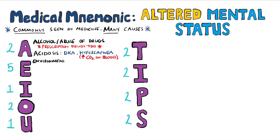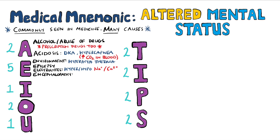E is our biggest list of causes, including environmental causes like hyper or hypothermia, epilepsy, electrolyte imbalances, particularly hyper or hyponatremia and hyper or hypocalcemia. Encephalopathy is another, which may be acute, such as in Wernicke's encephalopathy, due to the body running out of B vitamins, especially vitamin B1 thiamine.